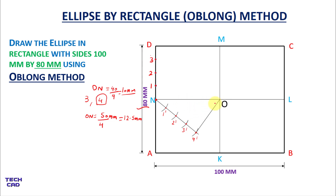After that, make parallel lines from 1′, 2′, and 3′ towards the ON line. This is the way to divide your ON line into four equal divisions. Now I can give the names to the points: 1′, 2′, and 3′.